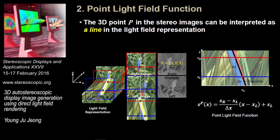This slide shows how a 3D point P in a stereoscopic image can be represented in light field representation. There is a point in both left and right images. Since we restore the disparity value, if we reconstruct it in light field space, the slope of the blank line represents the 3D point P in light field representation. As you can see, it can be simply defined by the disparity value of the point.